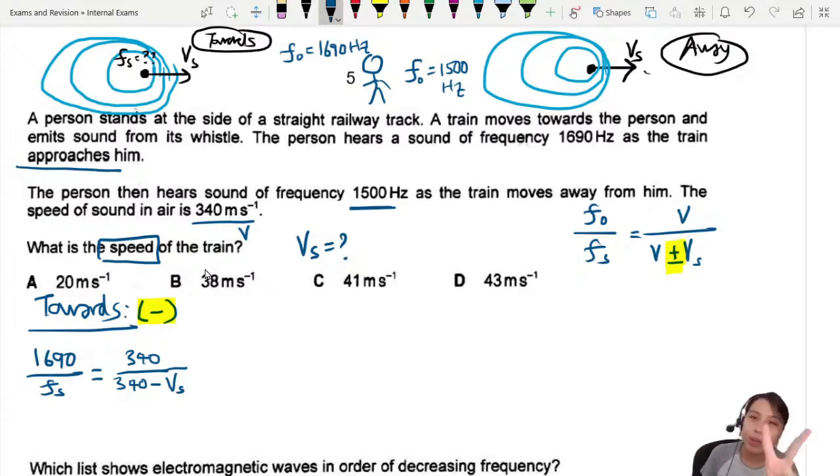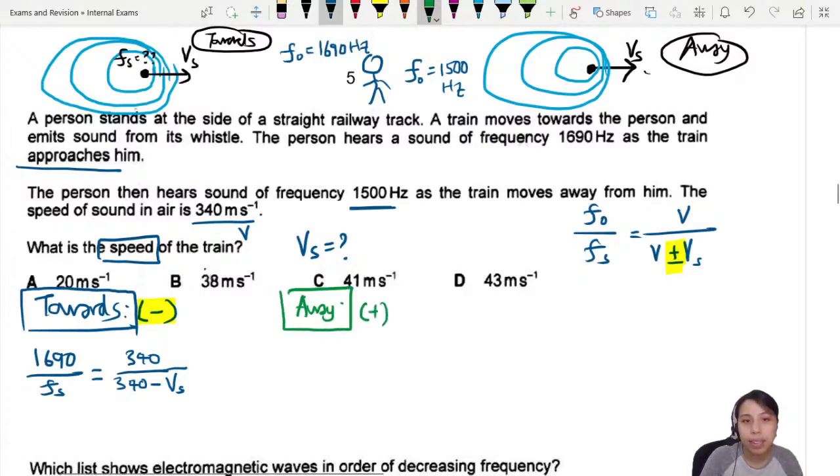If there's two unknowns means we need two equations to solve. Moving away also can make an equation. Moving away, you're going to use the same equation but this time put plus instead.